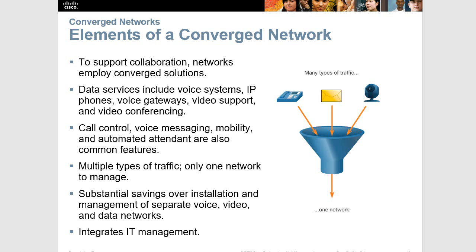We've seen the idea of a converged network in one of the first two or three chapters in CCNA1, so nothing really new here. Multiple types of traffic — different types of data that could be sent: voice, email, video conferencing — basically anything over the same network.